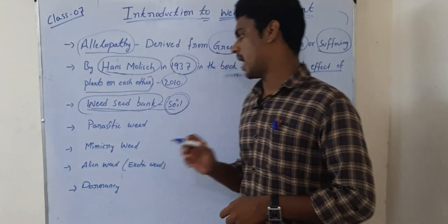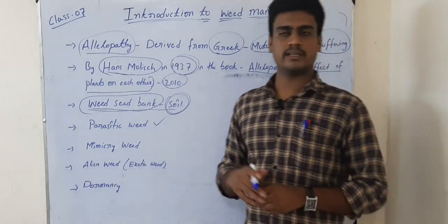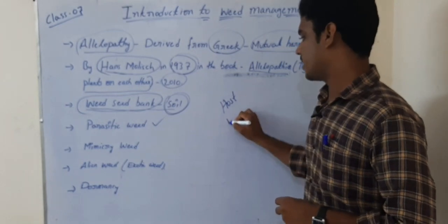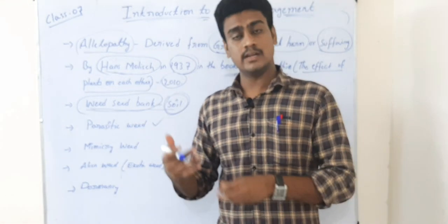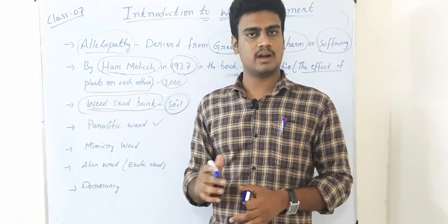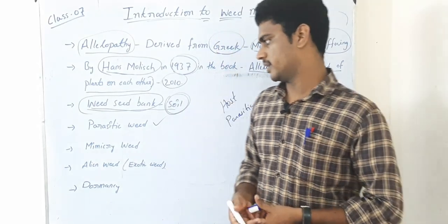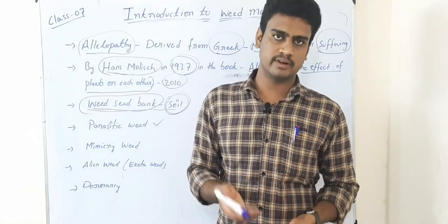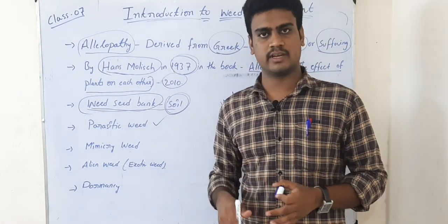A parasitic weed is any plant that depends on another plant — the host plant — for its growth and development. It may depend partially or completely. If it depends completely, it is called a complete parasite; if partially, it is called a partial parasitic weed. The dependence may be for nutrients, water, or other needs. There are four types of parasitic weeds, which will be explained in upcoming classes.